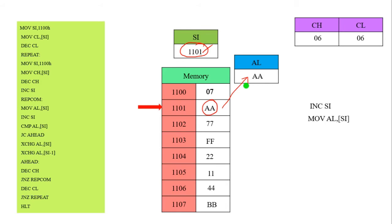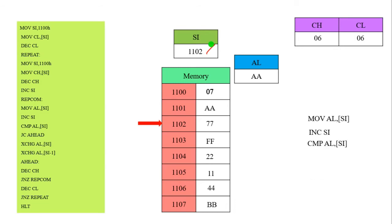We again increment the SI. The SI register's value becomes 1102. The pointer is now located at memory location 1102, which contains the value 77. Now we are going to compare: CMP AL, [SI]. The SI value is 1102, and this memory location contains 77. Now we are going to compare 77 with AA — the AL register contains AA.